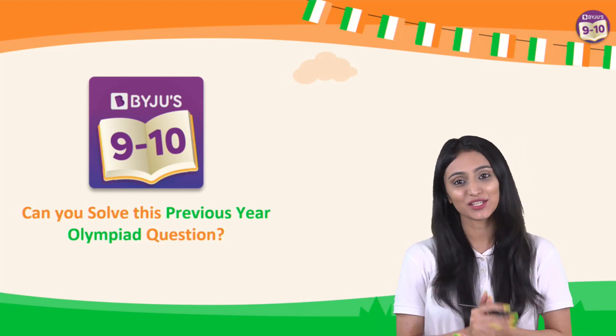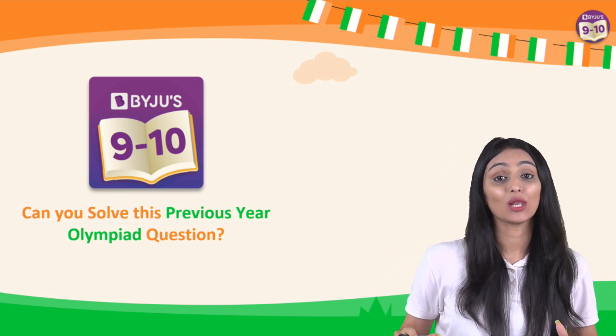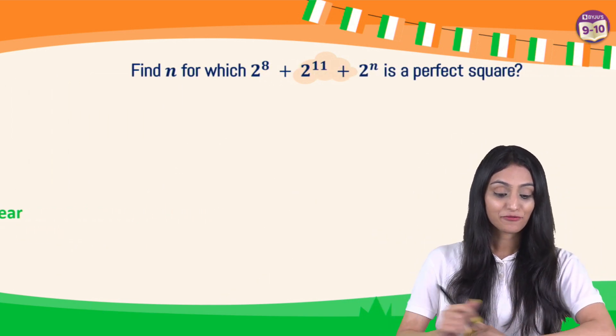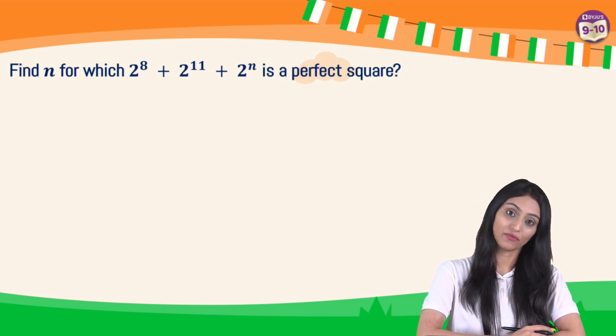Hey students, welcome to yet another wonderful session. So today I have come up with a very interesting Olympiad question, and it's a previous year Olympiad question. Let's see if you can solve this. Find n for which 2 to the power 8 plus 2 to the power 11 plus 2 to the power n is a perfect square.